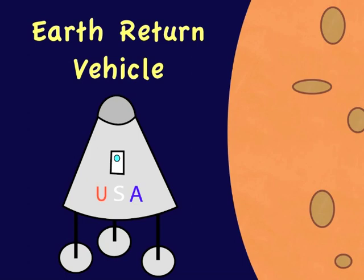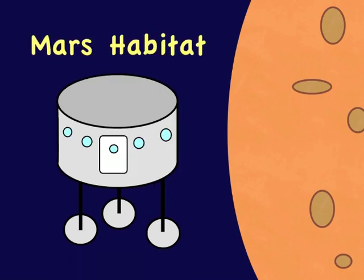But people are going to need somewhere else to live on Mars, and so we have the Mars habitat. People will actually begin living in it during the six-month trip from Earth to Mars, and then they're going to continue to stay in it for up to a year on Mars.